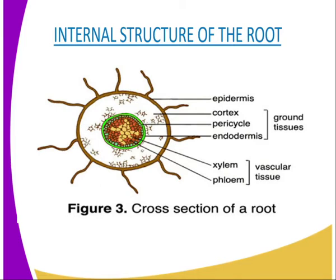Now we are going to look at the function of each part as we see from our diagram. The first part is the cortex. The cortex is made up of loosely packed thin-walled parenchyma cells. In young roots, it forms the extensive region between the epidermis and the vascular bundle. Water molecules pass into these tissues to reach the vascular bundle. It also acts as a storage tissue.